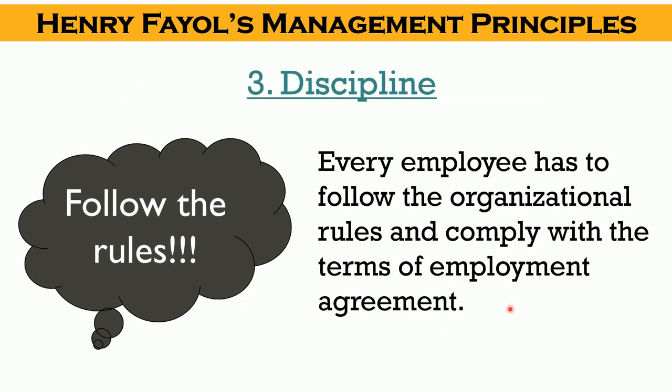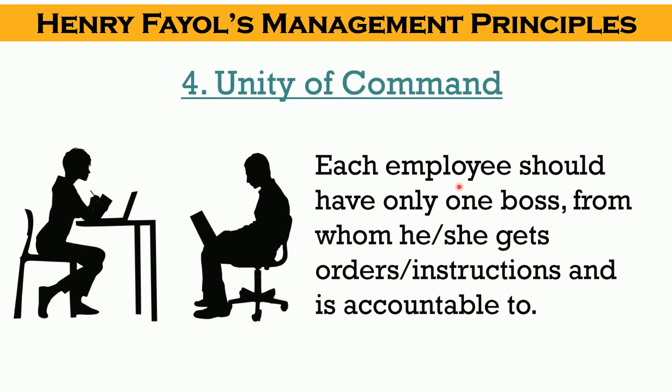The next principle is discipline. According to this principle, there must be proper discipline in an organization and every employee must follow the rules of the organization and comply with the terms of the employment agreement. Unity of command states that there is only one boss to an employee who gives him orders and instructions, and the employee reports to him only. This reduces chaos and delays in decision making.